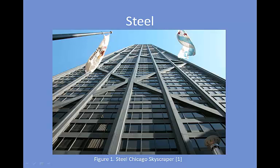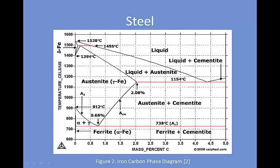One of the reasons steel is so useful is its versatility. This versatility is born from the steel's ability to form different phases and different micro-constituents, or ordering of these phases. For plain carbon steels, the phases and micro-constituents that form are a function of carbon content and cooling rate. Each phase and micro-constituent provides different mechanical properties, and their formation is governed by their nucleation and growth.